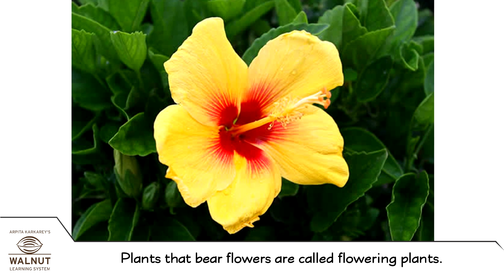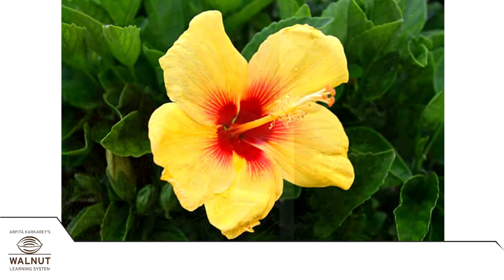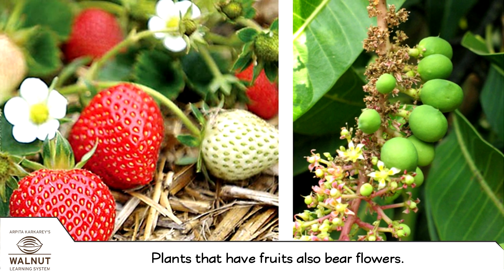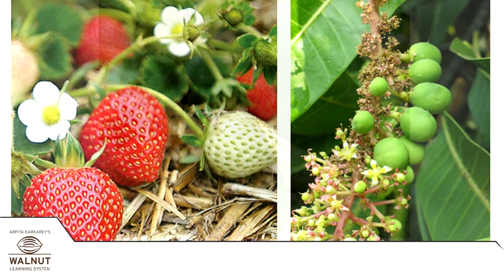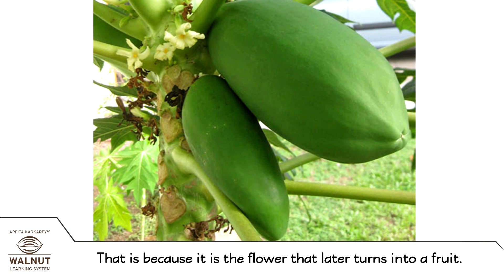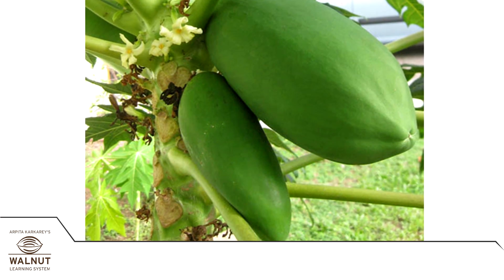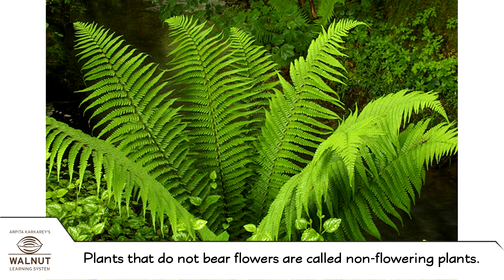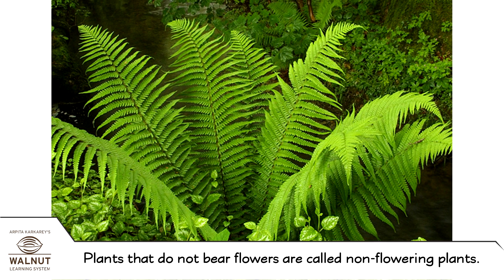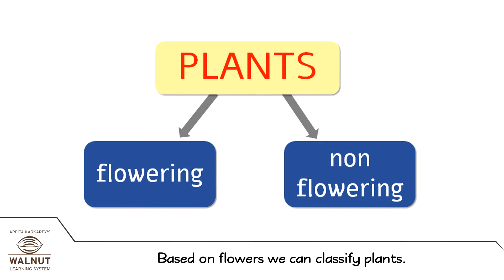Plants that bear flowers are called flowering plants. Plants that have fruits also bear flowers, because it is the flower that later turns into a fruit. Plants that do not bear flowers are called non-flowering plants. Based on flowers, we can classify plants.